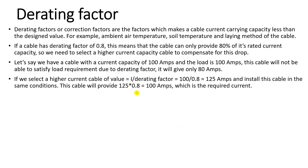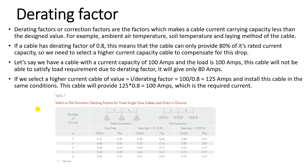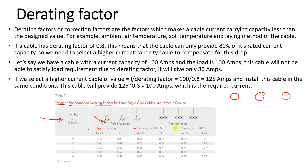This lesson focuses on the derating factor due to cable formation. In the catalog you will find tables for the trefoil and flat formations for single-core cables. The tables also include the number of circuits, the formation type, and whether the cables are touching or have spacing between them.